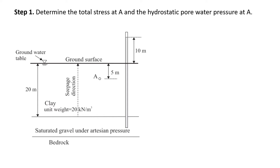So let's start with the first step, which is to estimate the total stress, and also estimate the hydrostatic pore pressure. The total stress is the unit weight of soil times the depth to point A. In this case, we know that the unit weight of clay is 20 kN/m³ and the depth to point A is five meters. So the total stress at point A will be 100 kN/m².